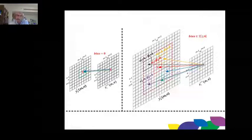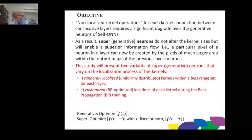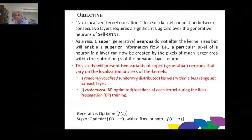It is analogous to optimizing a 1D function f(t): we can optimize f itself, or optimize a shifted version f(t − τ), or optimize both f and the shift τ simultaneously to maximize learning performance.